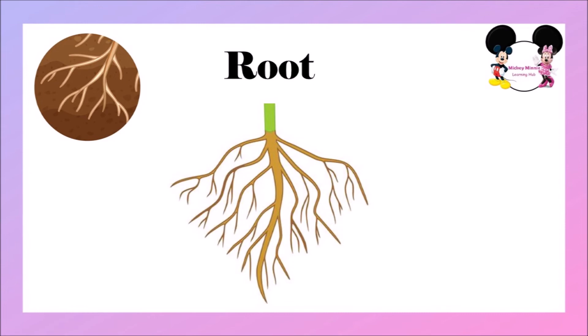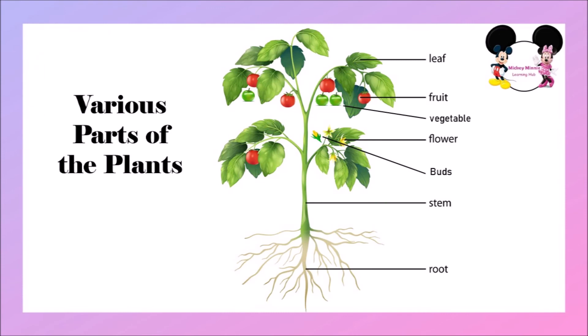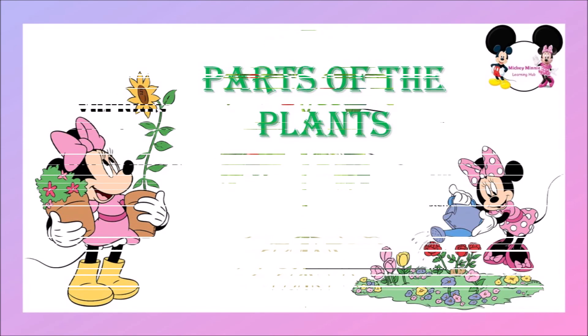Okay, children. Let's revise various parts of the plants once again. Shall we all repeat it? The first one is leaf. Fruit. Vegetable. Flower. Buds. Stem. Root. These are the parts of the plants.